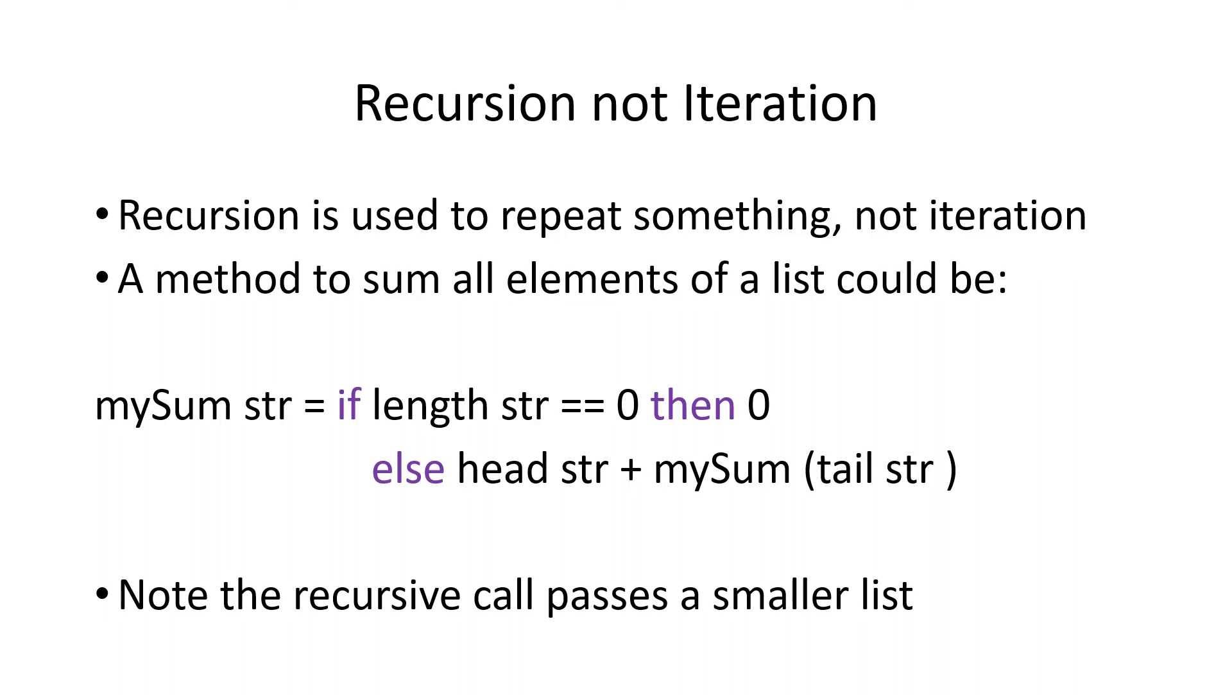Notice we had to put tail str in parentheses, because my sum takes one list as a parameter. And if you left off the parentheses, it would interpret tail to be the parameter to my sum, and tail as a function, not a string.